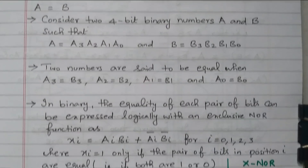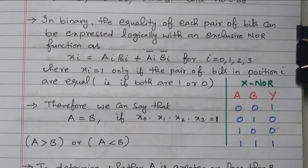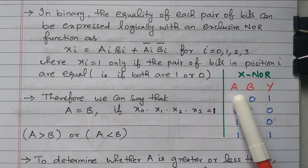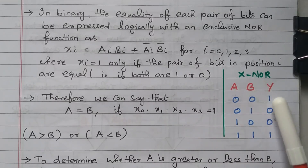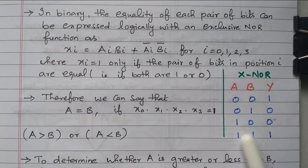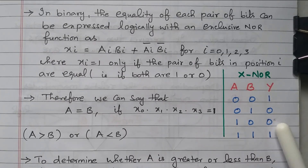What is the exclusive NOR function? The truth table for the exclusive NOR gate has two inputs A, B and output Y. For the four combinations: 0,0 output is 1; 0,1 output is 0; 1,0 output is 0; and 1,1 output is 1.